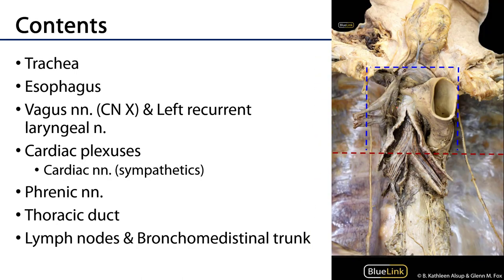Moving deeper, we can see the trachea, and behind the trachea we can see the esophagus — that muscular tube heading down towards the stomach. The trachea bifurcates at about the level of the thoracic plane, with the carina directing air traffic between the right main stem bronchus and the left main stem bronchus.